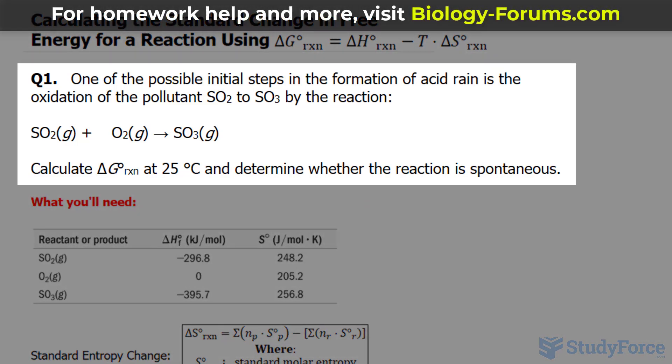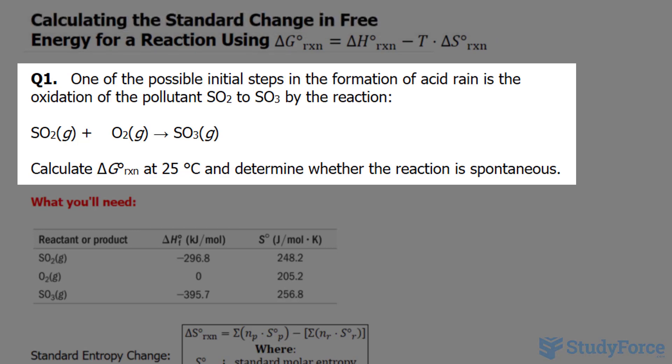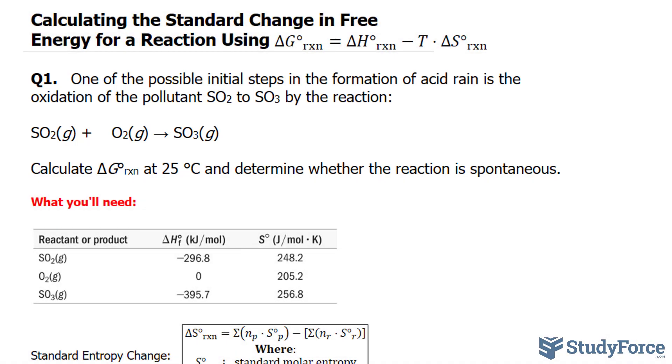The first question reads: One of the possible initial steps in the formation of acid rain is the oxidation of the pollutant SO2 to SO3 by the reaction shown underneath. Calculate delta G for the reaction at 25 degrees Celsius and determine whether the reaction is spontaneous. We've discussed in past videos that the reaction is spontaneous when Gibbs free energy is negative, so let's keep our eye out for that.